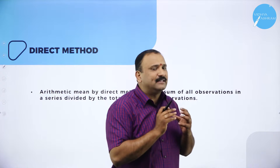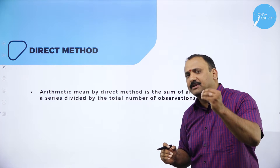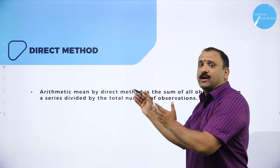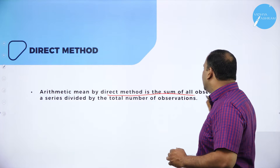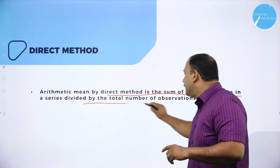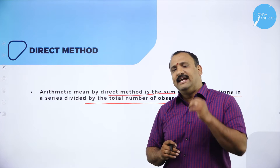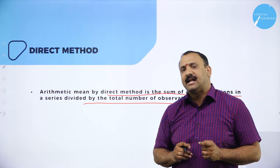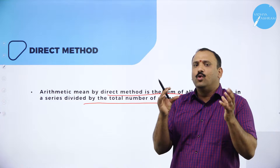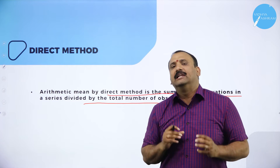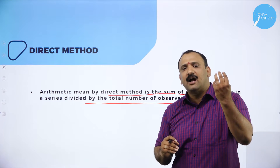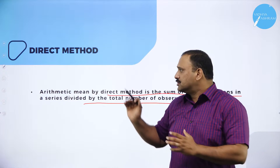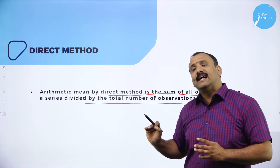We have different methods to arrive at the arithmetic mean. We are going to start with the simplest and easiest way — the direct method. Arithmetic mean by direct method is the sum of observations in a series divided by the total number of observations. A researcher's biggest challenge is that he has only abstract values; he does not know the real meaning of the data. He needs to come to a central point — an average — to understand the mean value of the data.